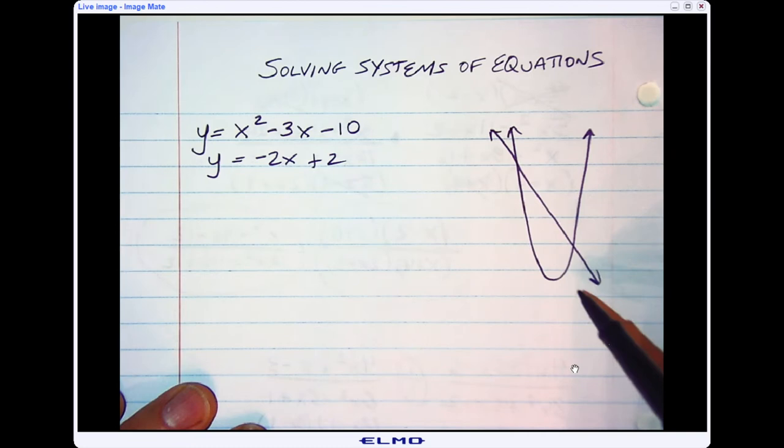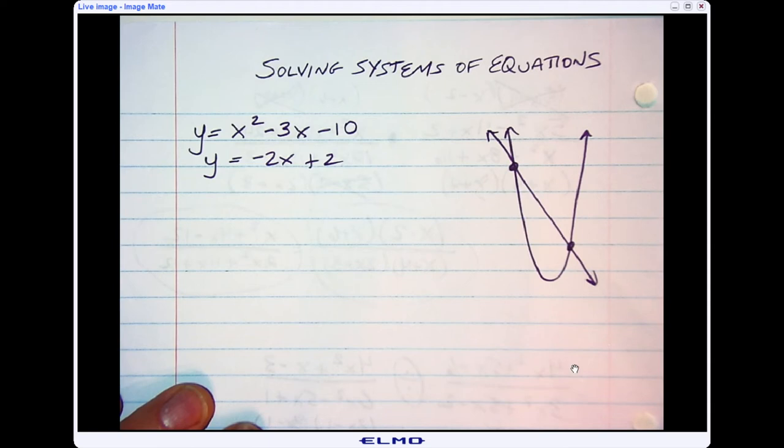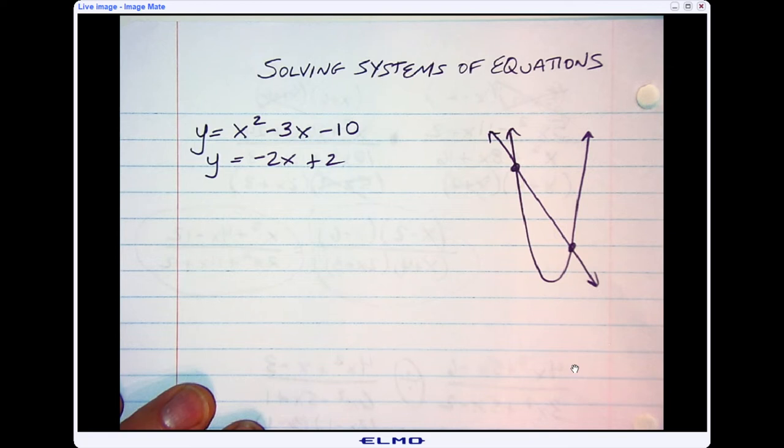So when you're solving a system, what you're really looking at the graph is where do they actually intersect or cross at? Sometimes you get whole numbers, and sometimes you might get irrational roots. So I'm going to share with you today how to solve these systems algebraically.